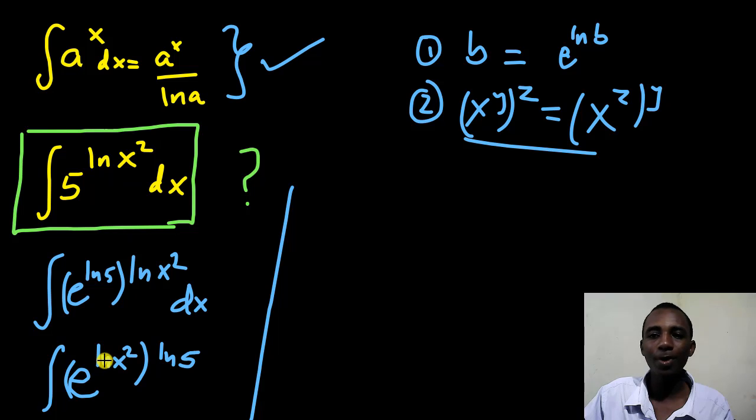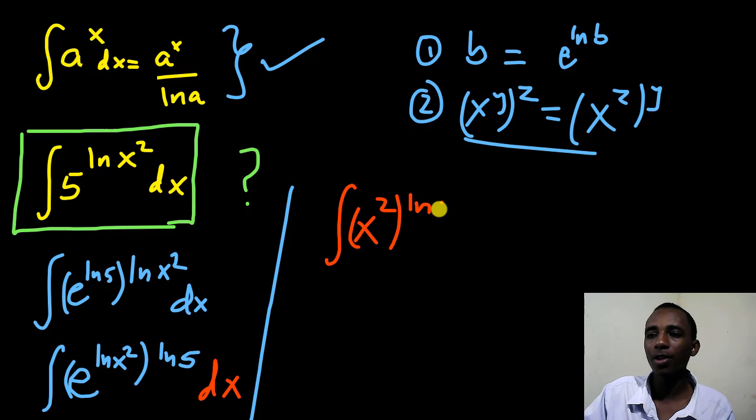Now, exponent and natural log, they cancel out. So I'll have this as integral of x squared to the power of natural log of 5, dx. So x squared natural log of 5, dx, which, according to the laws of indices, is simply x to the power 2 natural log of 5, just multiply those two powers, dx.